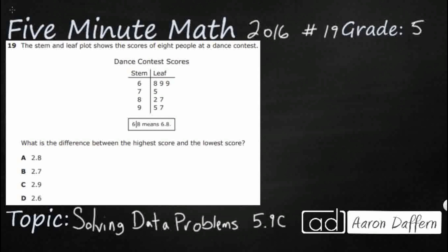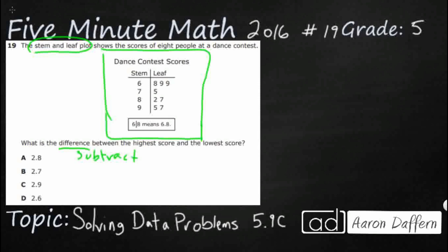So we have a stem and leaf plot, and we see that right down here, and it shows the scores of 8 people at a dance contest. We need to find the difference — so that gives us a clue that we are going to need to subtract — between the highest and the lowest score. So the most important thing of any stem and leaf plot is we need to understand the key right down here.